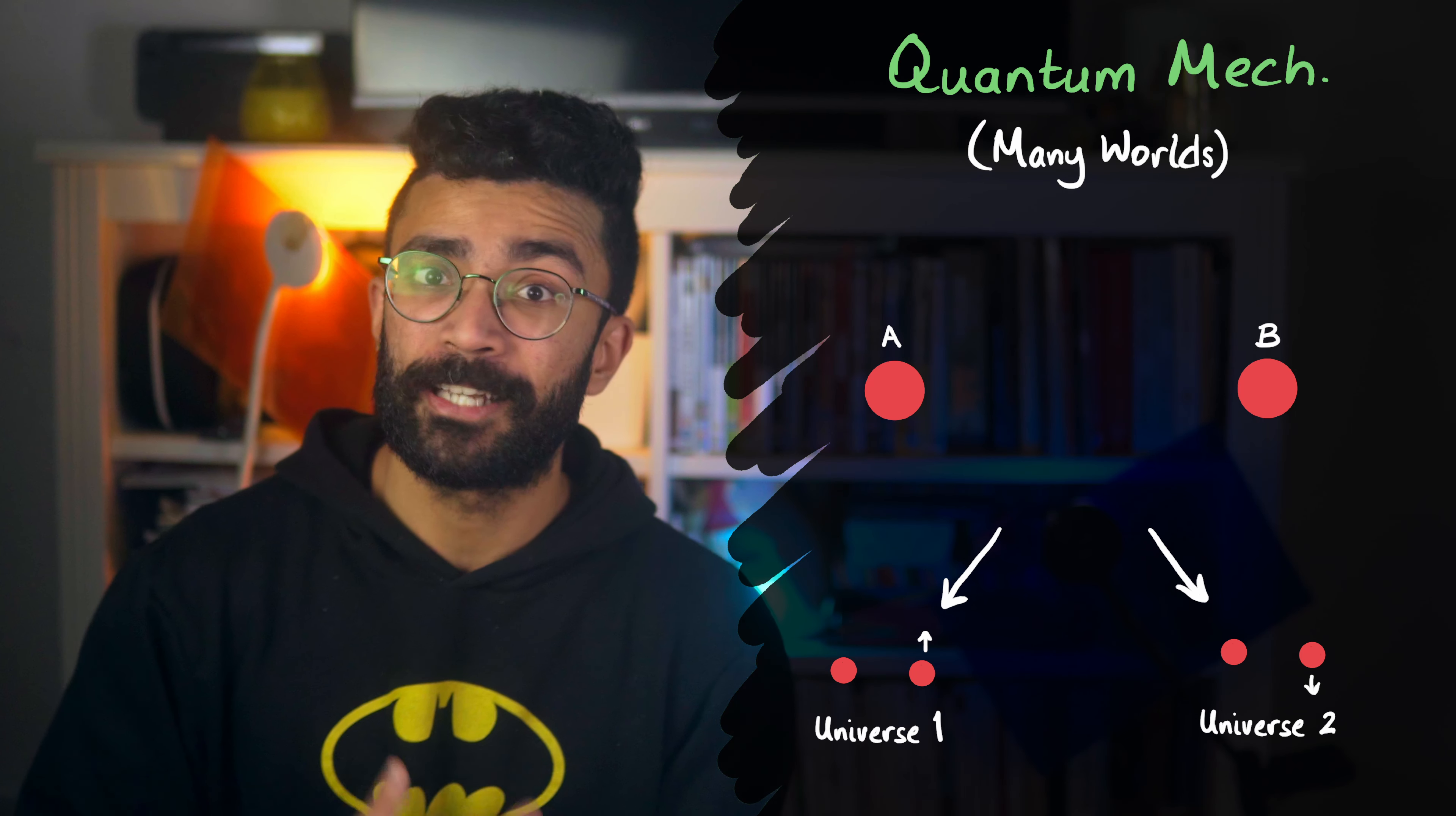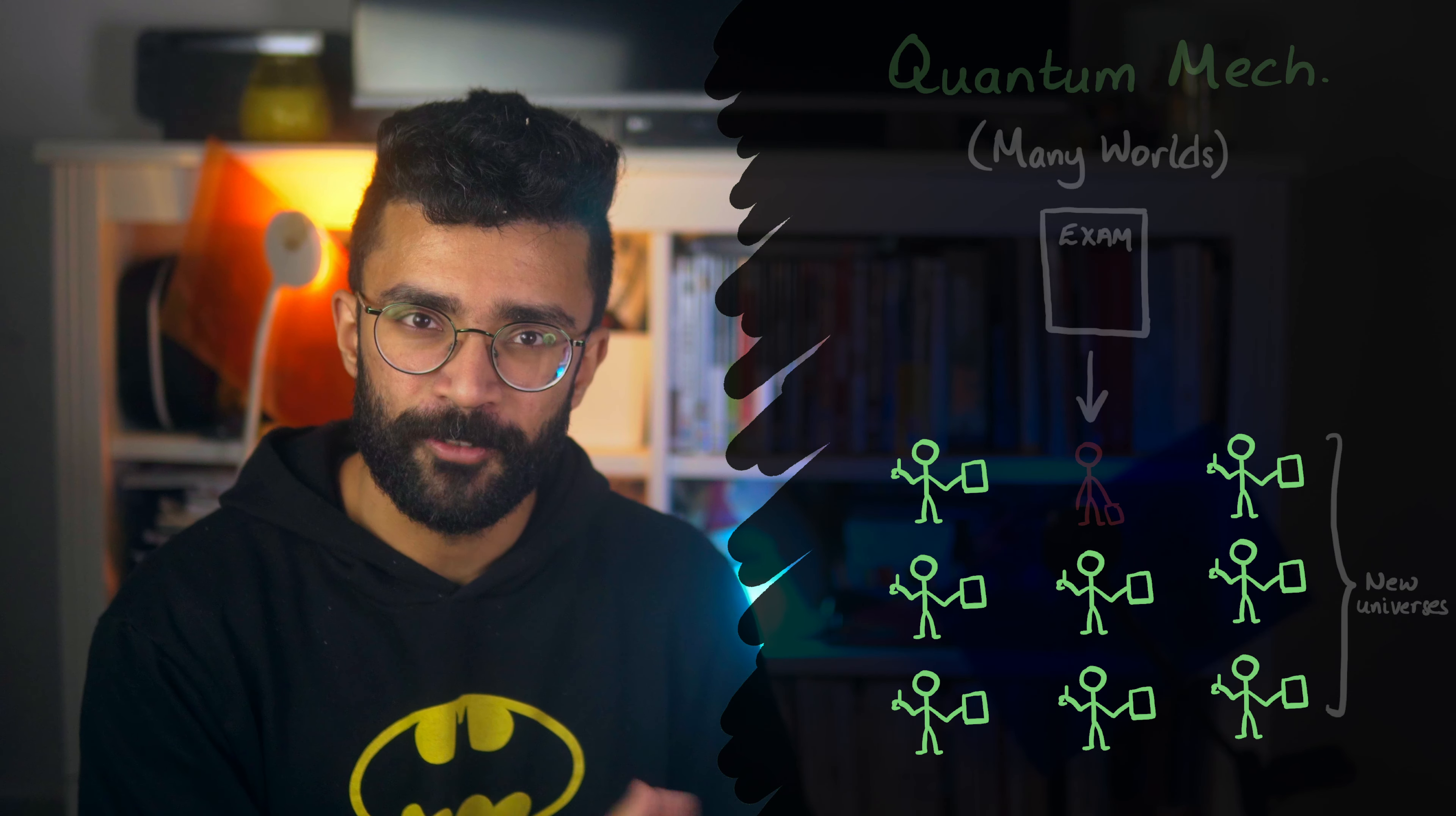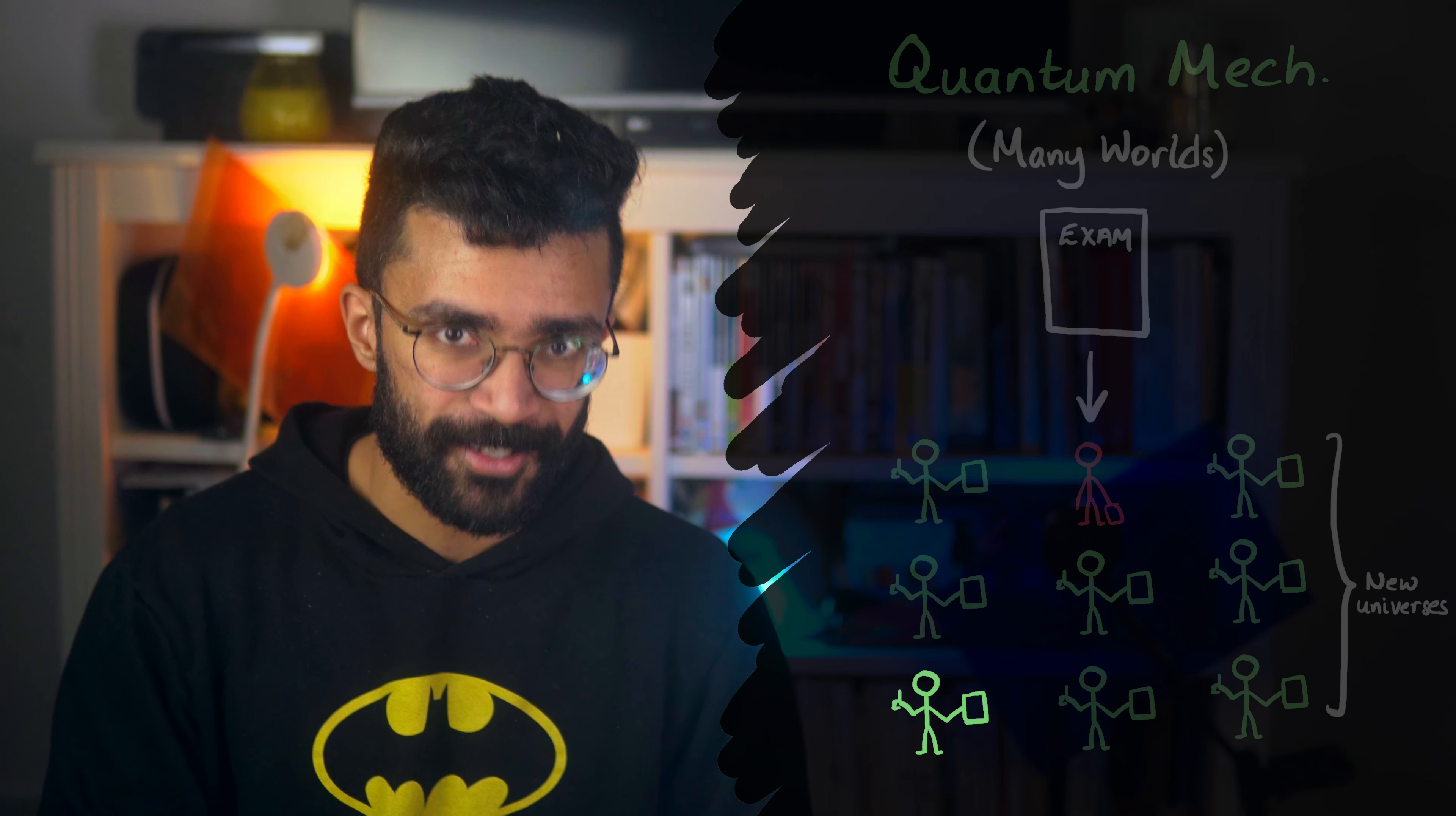For example, if I take a test, the universe splits off into loads of different possible results, some where I pass and some where I fail. Now because I've studied hard for this test, the large majority of the universes are the ones where I pass, and only some are the ones where I fail. Meaning me, or at least this universe's version of me, has a high chance of being in one of the universes where I pass.